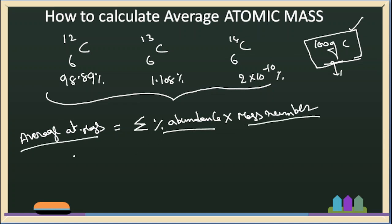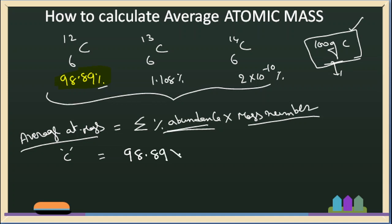Average atomic mass can be calculated for carbon. We have C-12 with percentage abundance 98.89%, multiplied by its mass number 12, divided by 100 — or simply 0.9889 multiplied by 12.